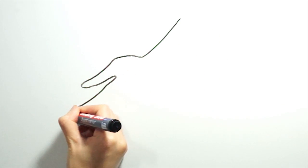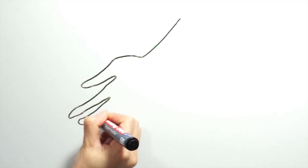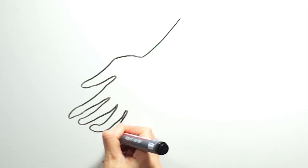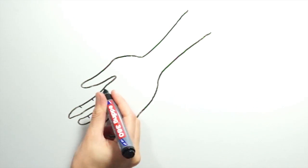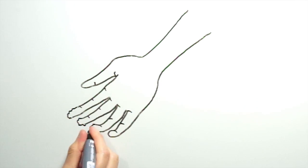However, we now know this is not the case. When we're submerged in water, nerve signals cause blood vessels in our fingertips to constrict, and this reduces the volume of the padding in our fingertips and toes, and this is what causes them to wrinkle.